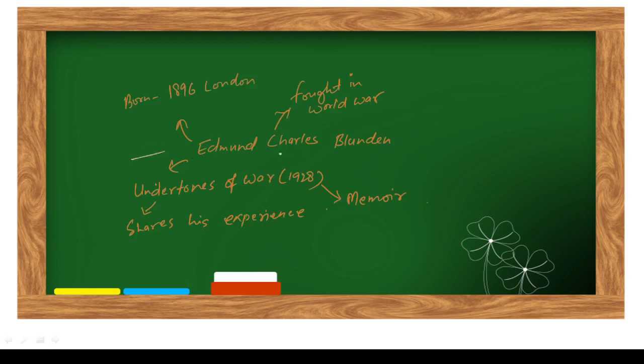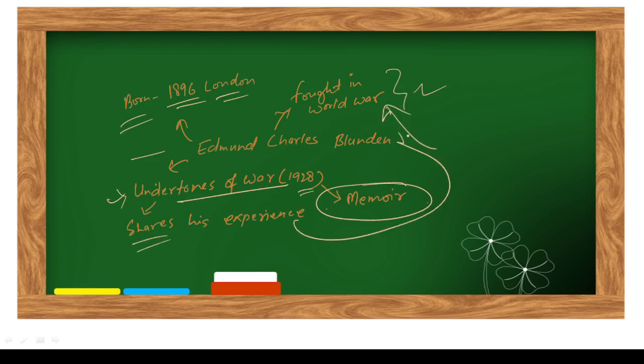Edmund Charles Blunden was born in 1896 in London and he fought in World War. As I told you, both the writers fought in World War - they were soldiers. Undertones of War, this is his work from 1928, and it was a memoir. He shares his experience of war as he was fighting in war.